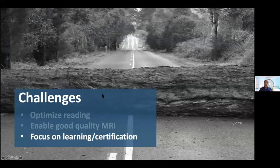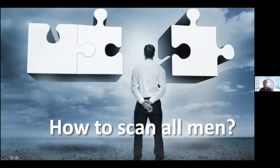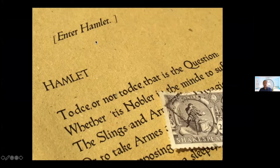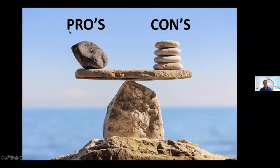Another challenge is to focus on learning and certification. Fortunately, there are many courses, now even replaced by webinars like this one. The next problem is how can we scan all these men? The question is: can we stop contrast? Because that would speed up things enormously. So, to DCE or not to DCE — that is the question. This talk will be about the pros and cons of the use of contrast agents in prostate MRI.